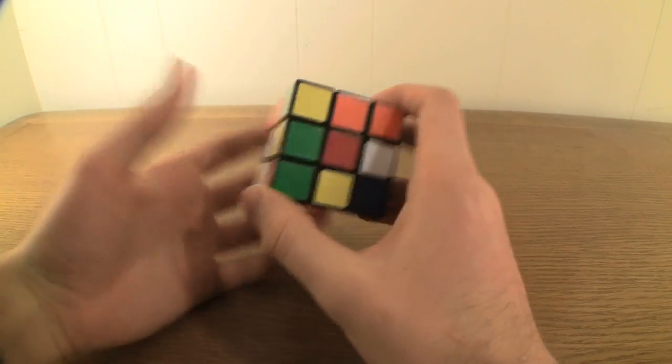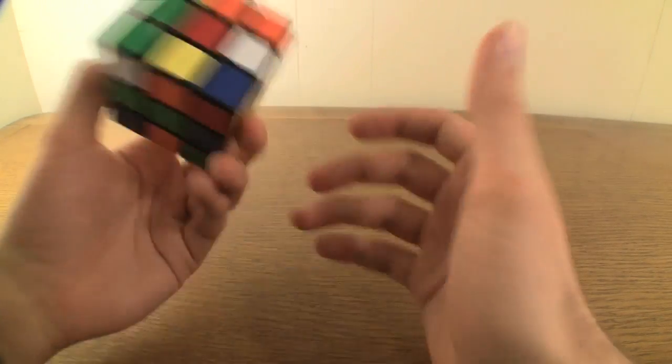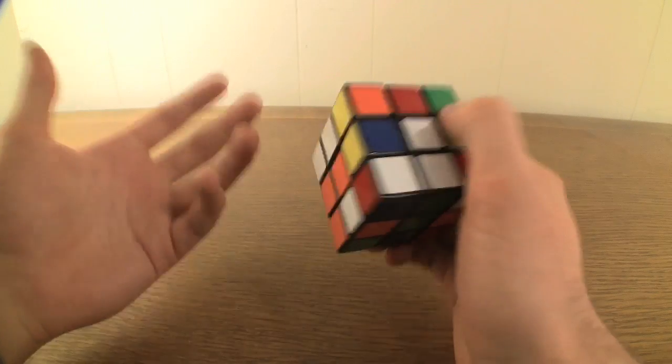Once you've learned how to and are totally comfortable with solving the Rubik's Cube, you'll want to look around the cube for which side has the most already done, and would therefore be the best to start with.